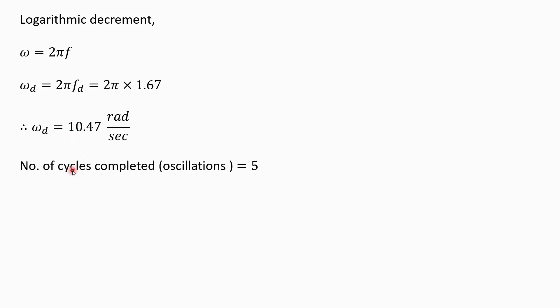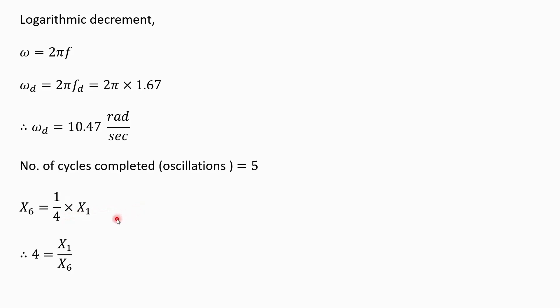The number of oscillations completed are 5, so n is equal to 6. Therefore x6 equals one-fourth of x1 — that is, the amplitude after 5 cycles is one-fourth of the initial amplitude. Transposing, x1 upon x6 is equal to 4.